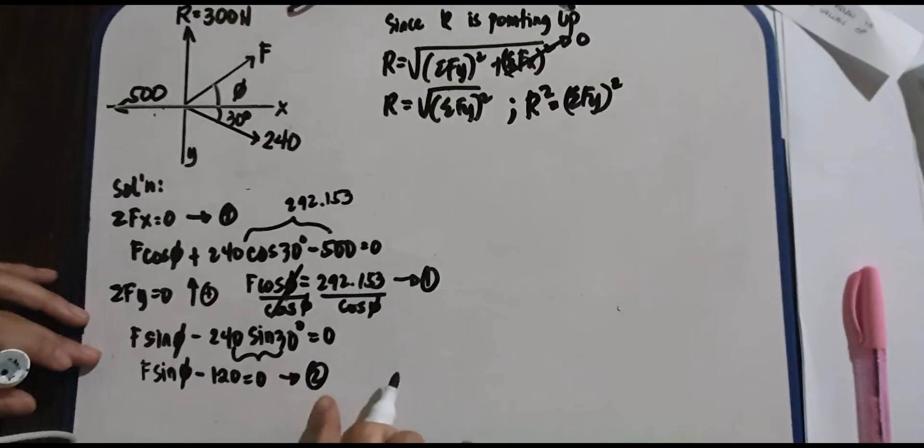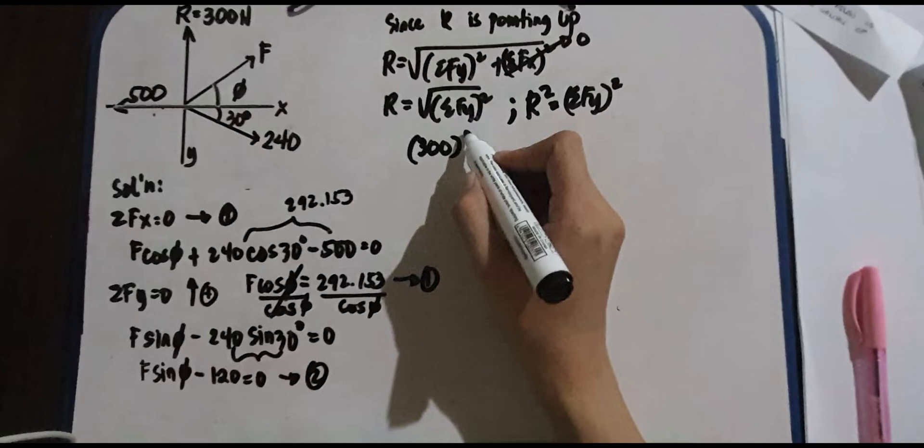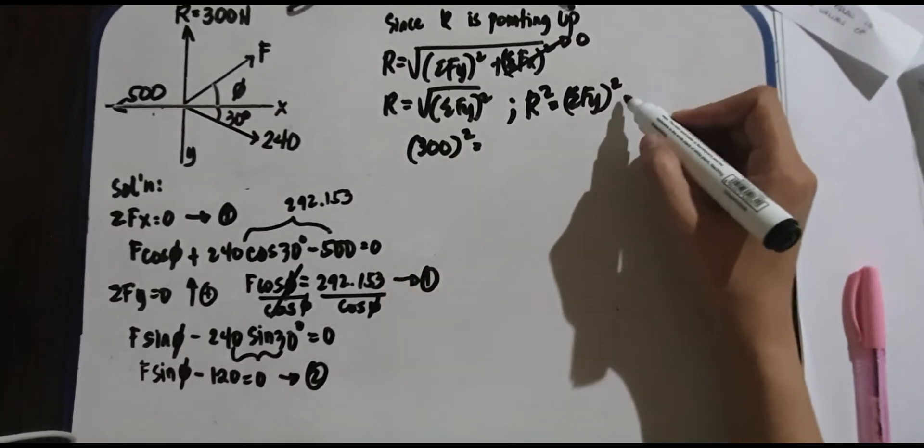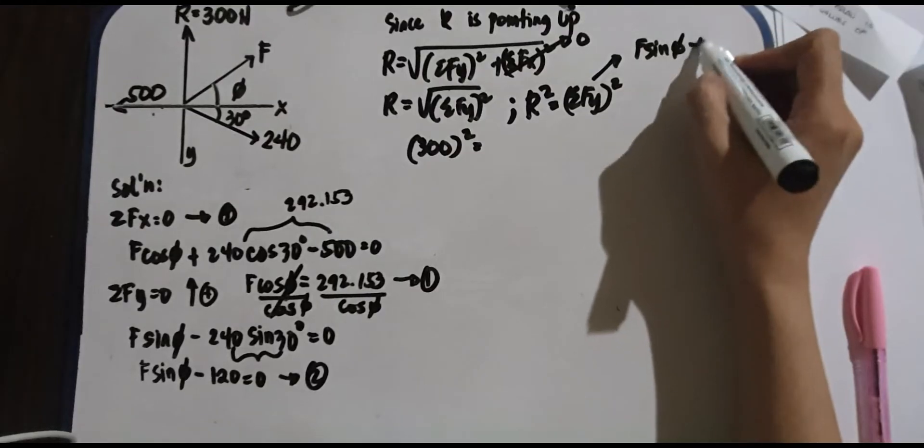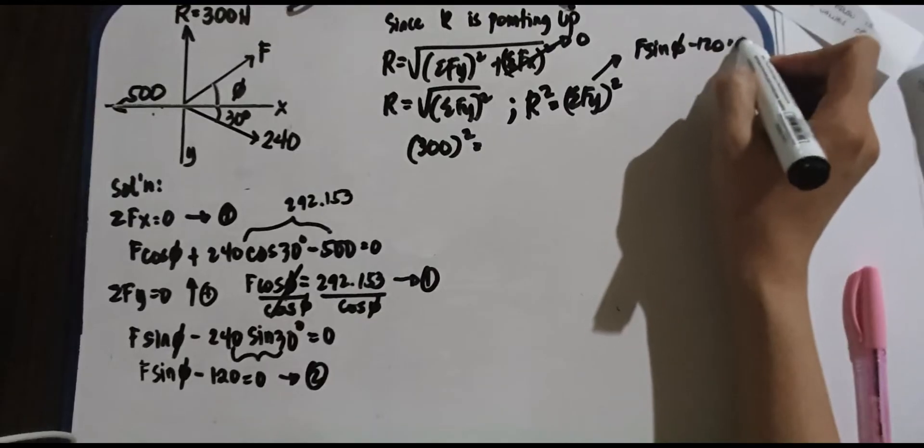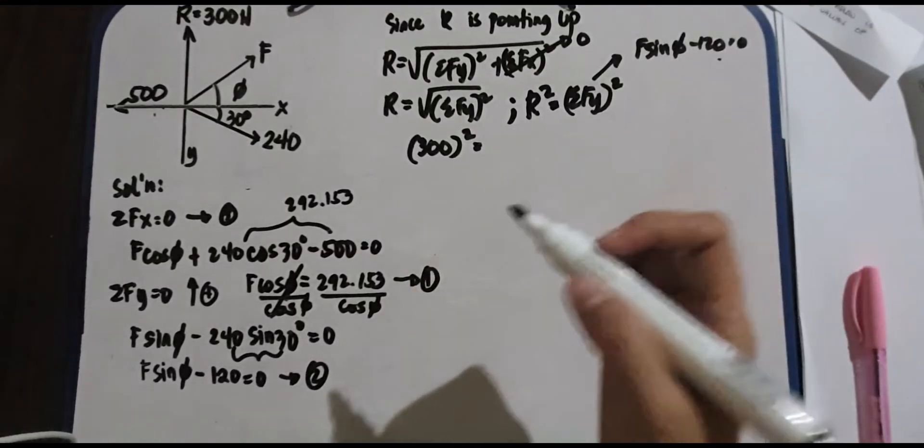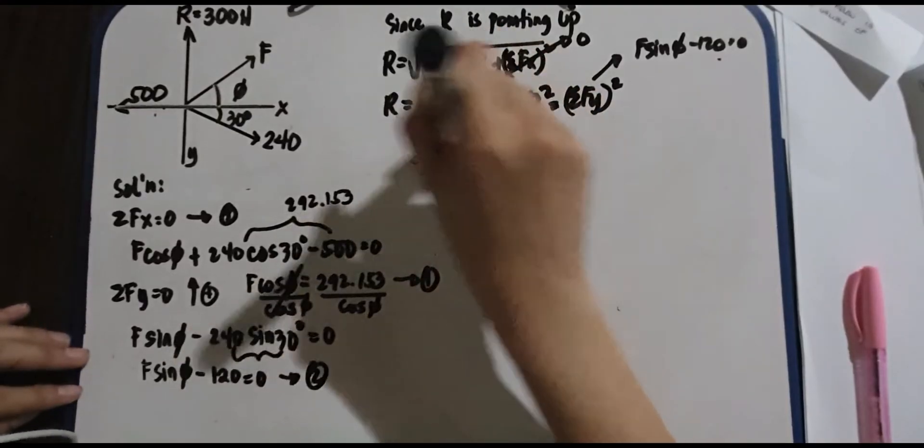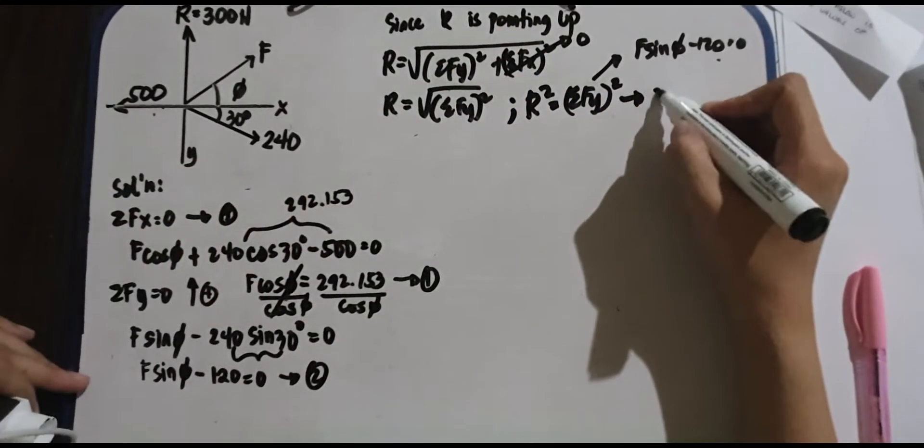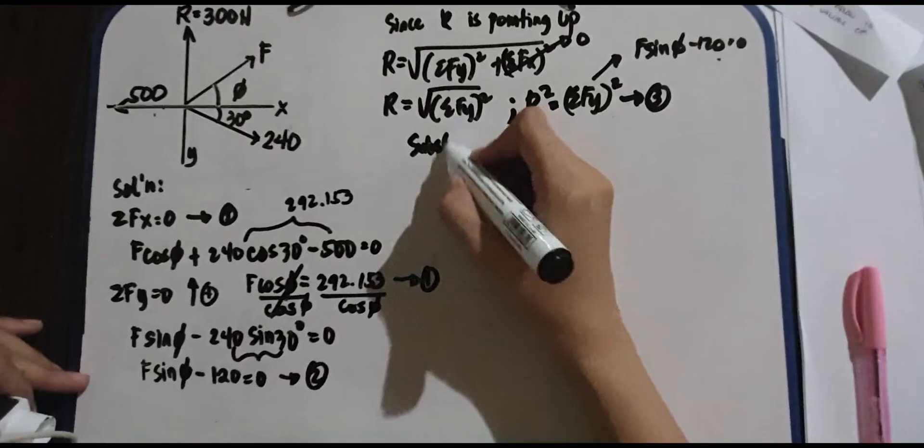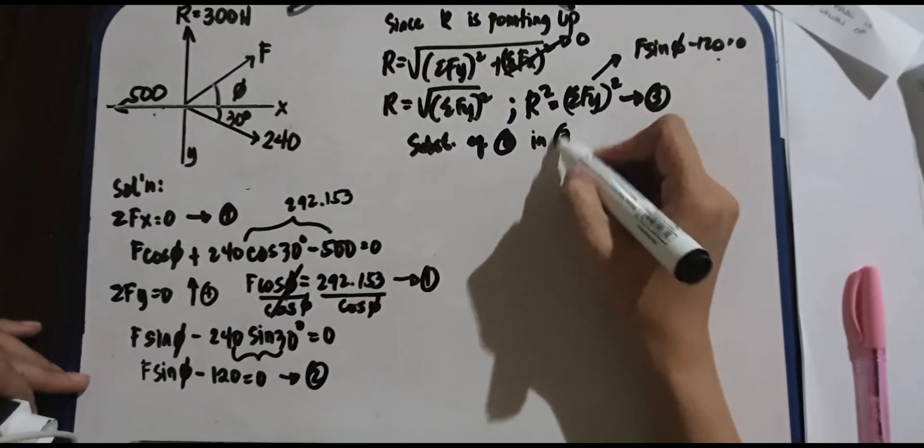So we have R squared equals summation Fy squared. Since Fy, we have a value for that, this is your Fy, let's just put it here. 300 squared equals, what's our Fy? Since your Fy is F sin phi minus 120 equals zero, we can substitute that into this value. So we can put it, to make it easier, to be cleaner, this is your equation 3.